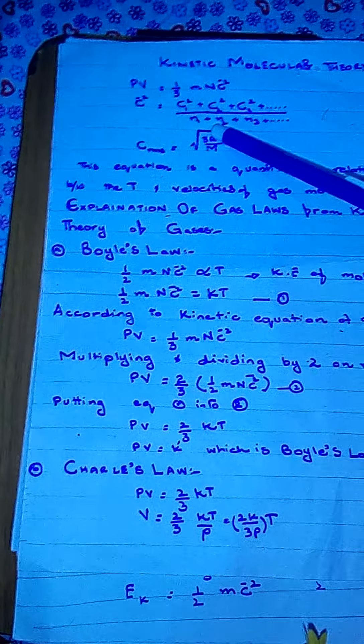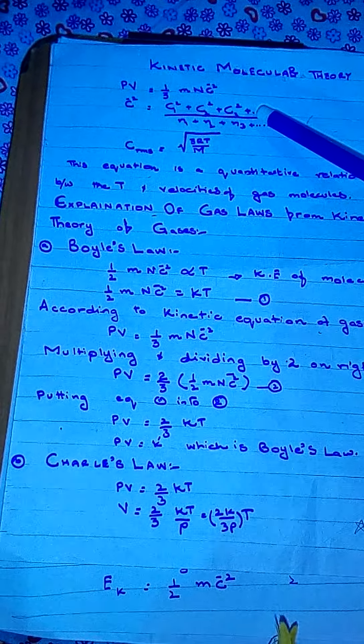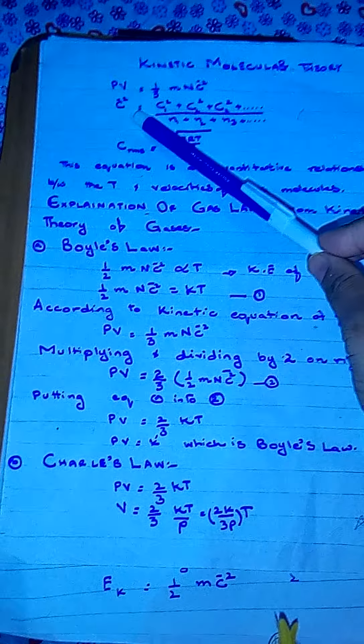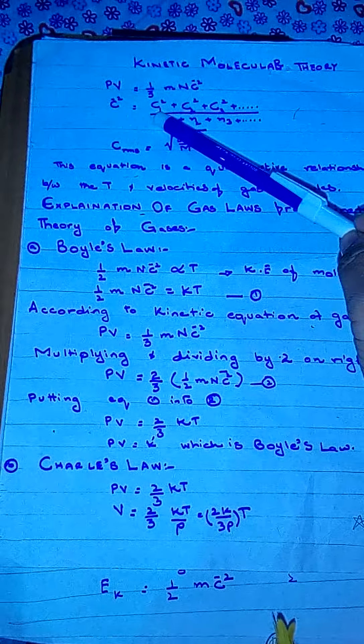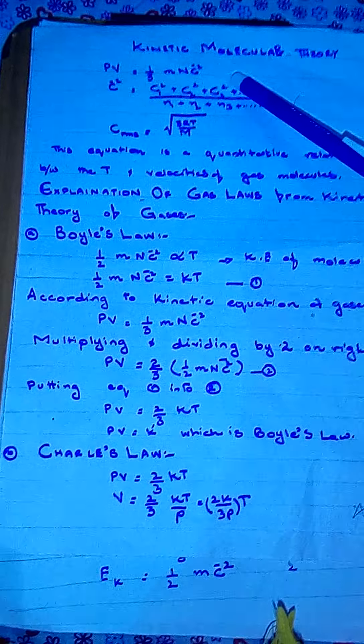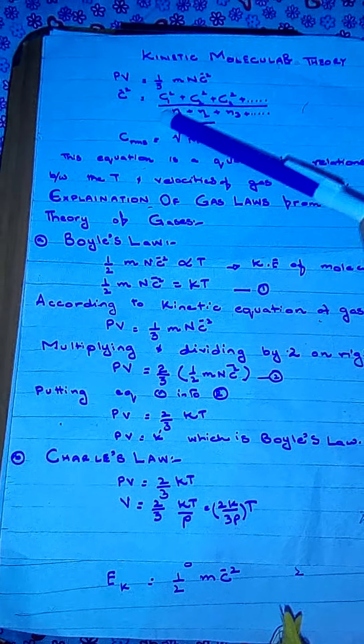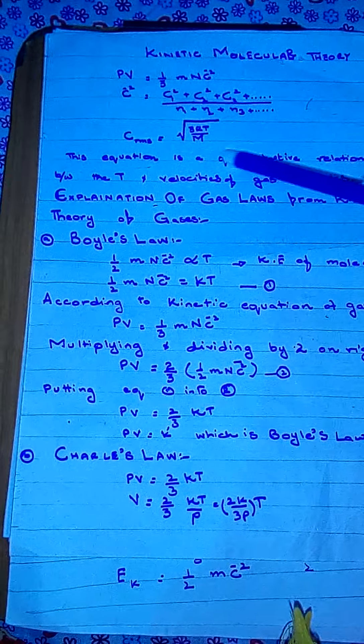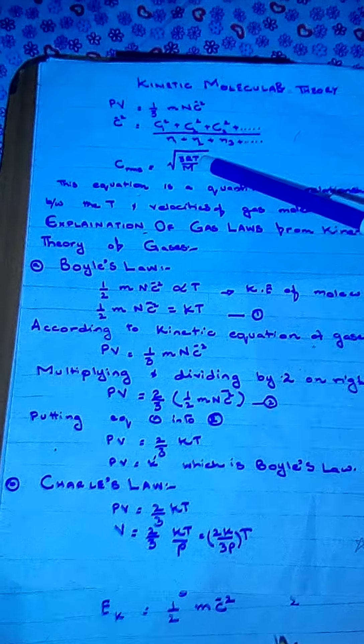C̄² is the mean square velocity. All the molecules of a gas under given conditions don't have the same velocities; rather, different velocities are distributed among the molecules. To understand this, study Maxwell's distribution of velocities. If there are n1 molecules with velocity C1, n2 molecules with velocity C2, and so on, the mean square velocity C̄² = (C1² + C2² + C3² + ...) / (n1 + n2 + n3 + ...).